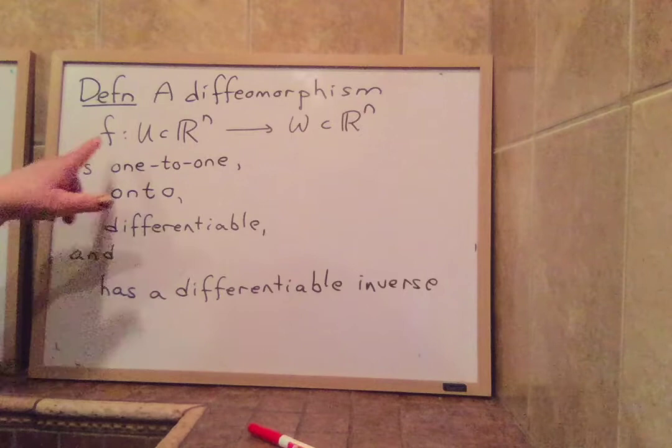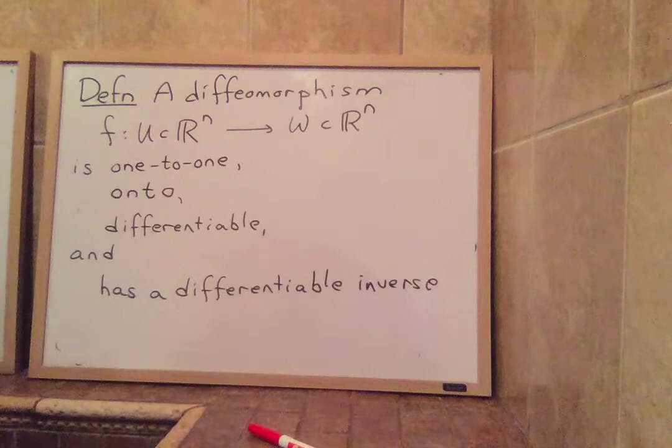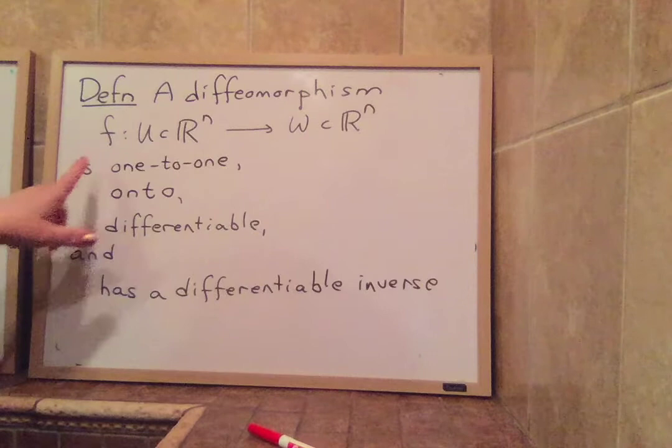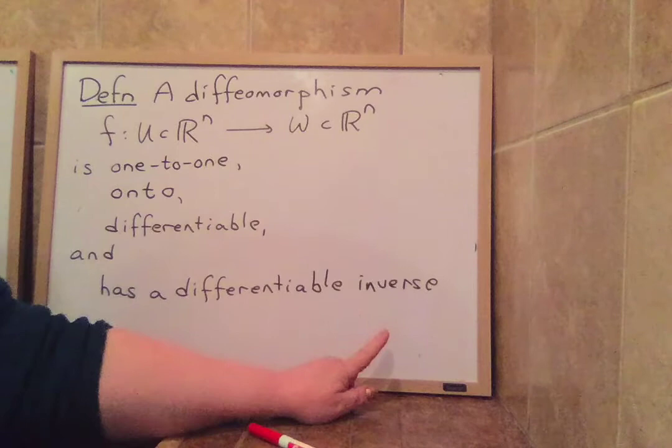The next topic is a diffeomorphism. A diffeomorphism is a function f that goes from an open set U inside ℝⁿ to an open set W inside ℝⁿ, the same dimensions here. It's called a diffeomorphism if it's one-to-one, onto, differentiable, and has a differentiable inverse.